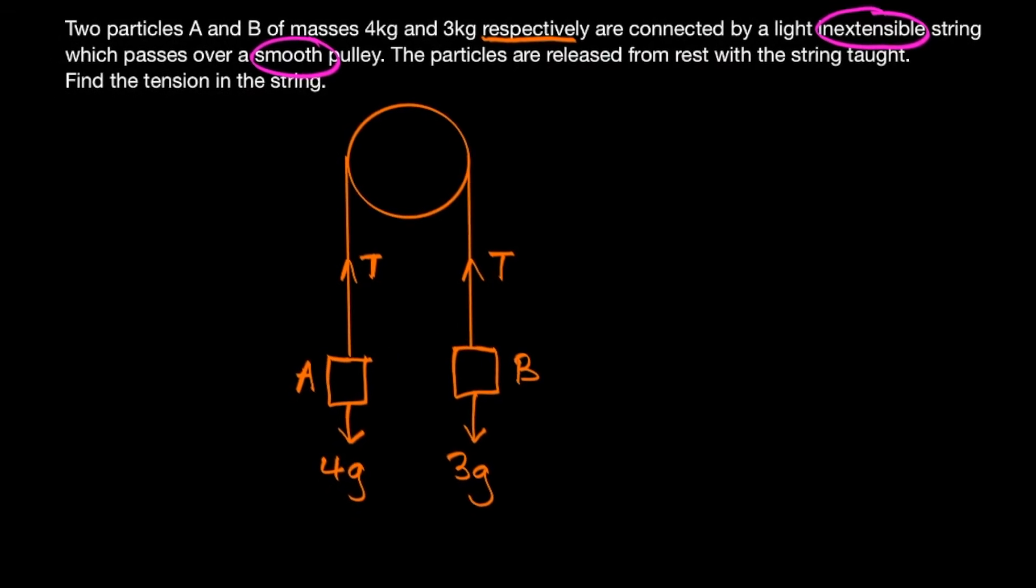And since we know that A weighs more than B, that means we can tell that the acceleration of A is going to be traveling in this direction, and the acceleration of B therefore is going to be in this direction. And obviously because it's the same string, the acceleration of A is going to equal the acceleration of B.